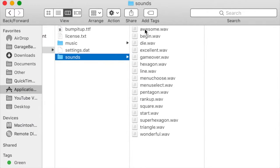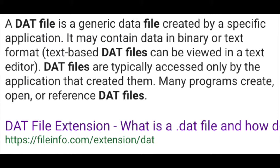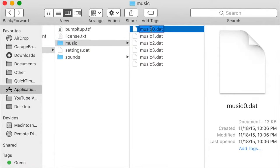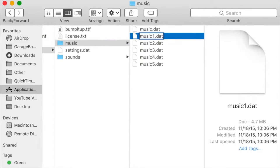What are DAT files? A DAT file is a generic data file created by a specific application. It may contain data in binary or text format. DAT files are typically accessed only by the application that created them. Many programs create, open, or reference DAT files — so apparently they're also used to store music. In any case, let's swap the names of music 0 and music 1.